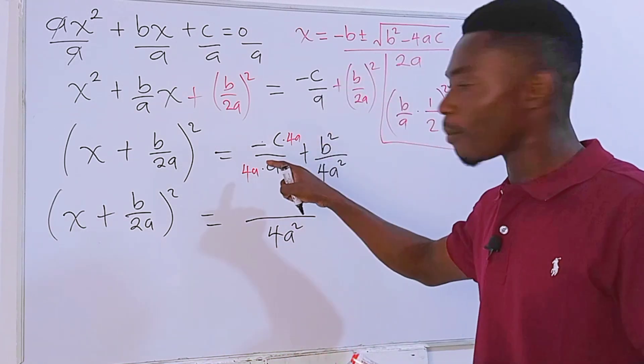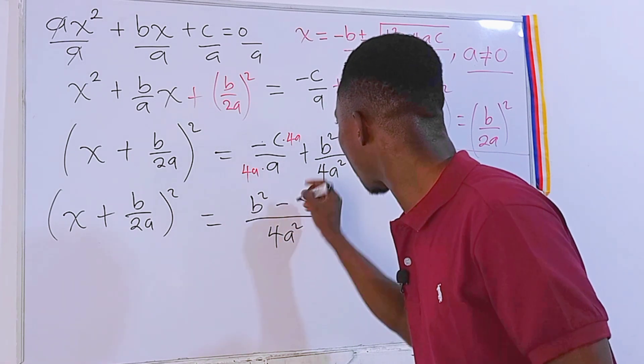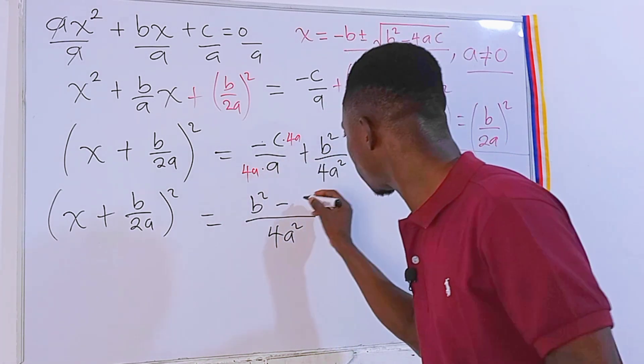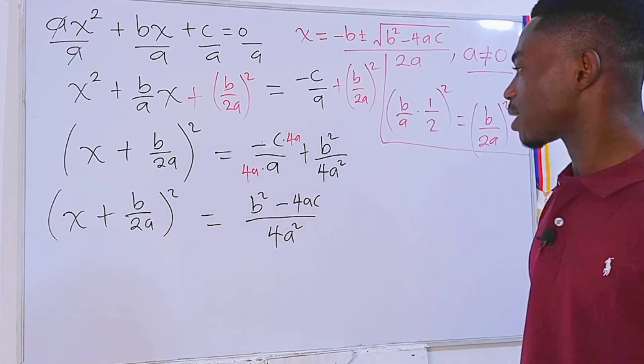Then the numerators, I will combine them. We have b squared, then minus 4a times negative c. That will be minus 4ac, just like that.